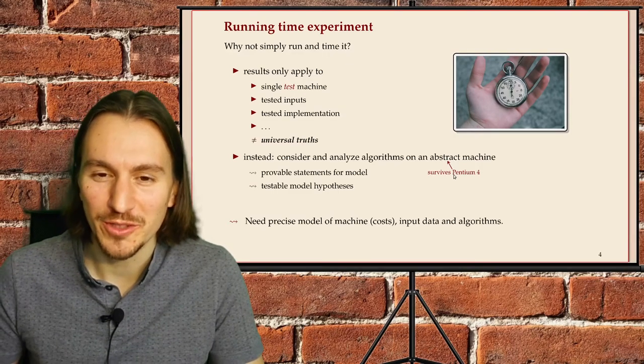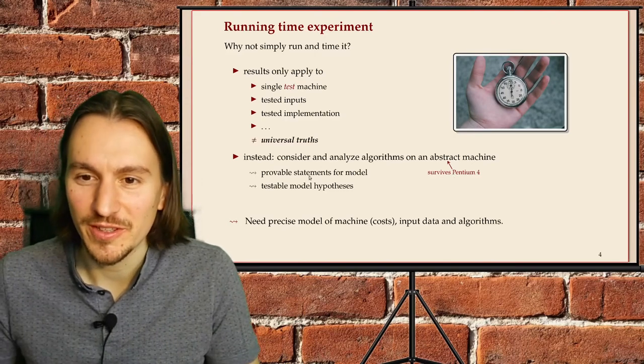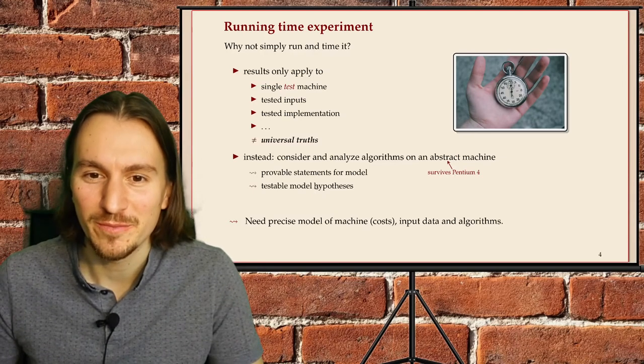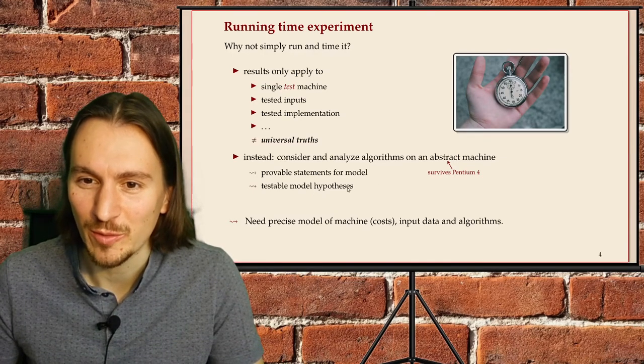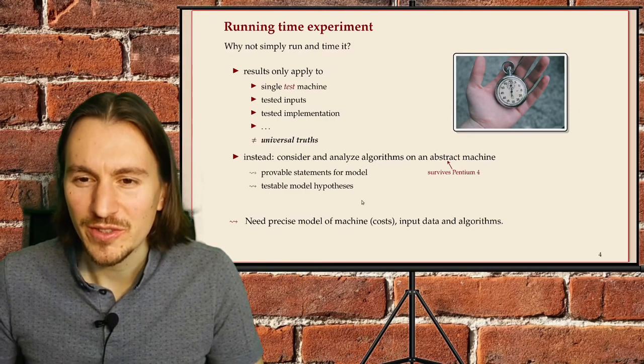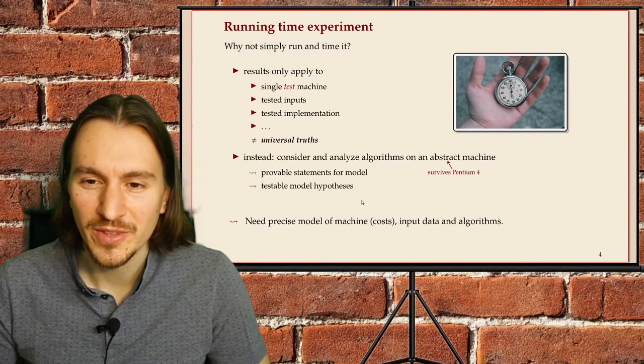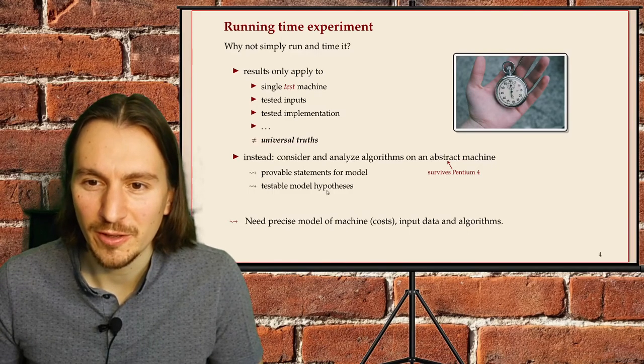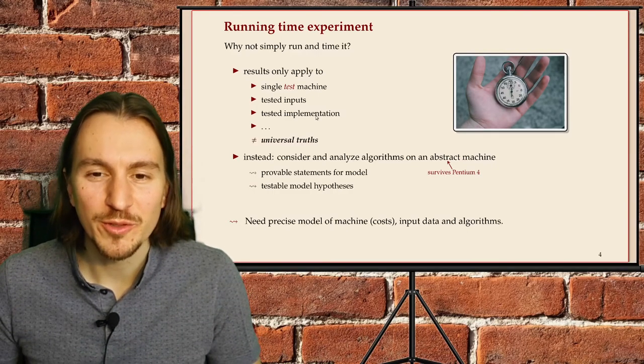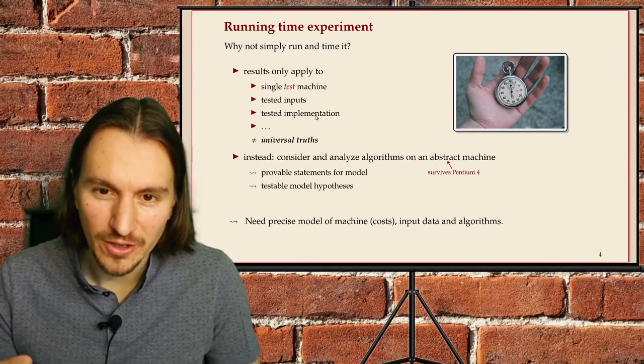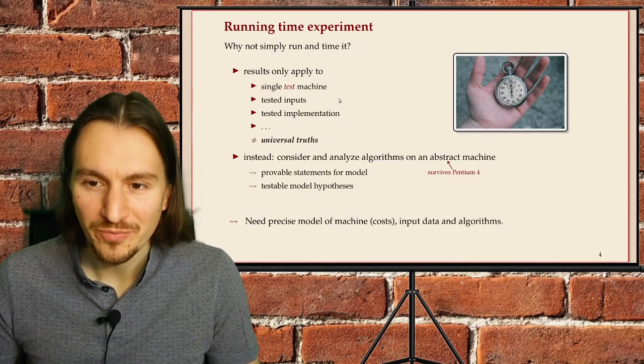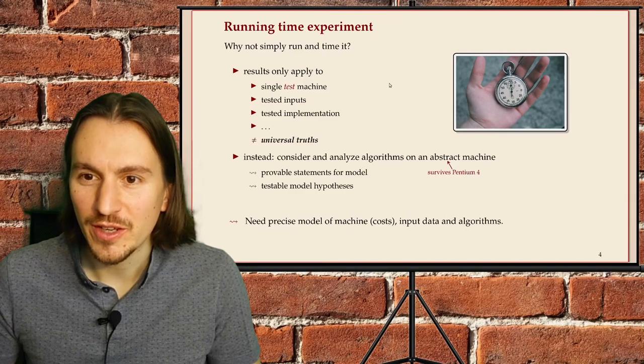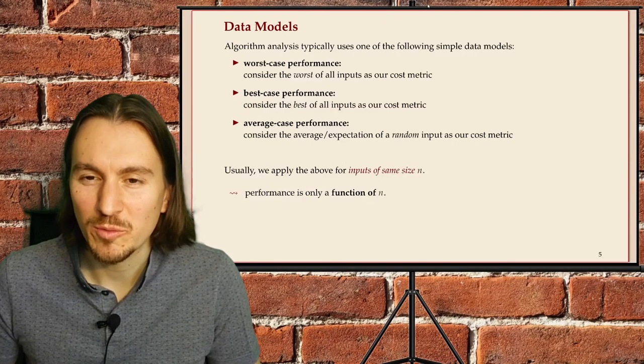So what we want is we want to analyze an algorithm on a slightly more abstract model. So we want to go a little bit away from an actual machine, just as much as necessary to prove mathematical statements in this model. That sounds more mathematical than it actually is. In most cases, you will see examples again. And what also comes out of this is a hypothesis that allow you to test. You can validate whether the model you made is too abstract to be useful. For that, you would again do experiments. But those would rather focus on the model and not on comparing different algorithms. So what that means is we need models for the different parts of an algorithm. And that's what we'll look at next.